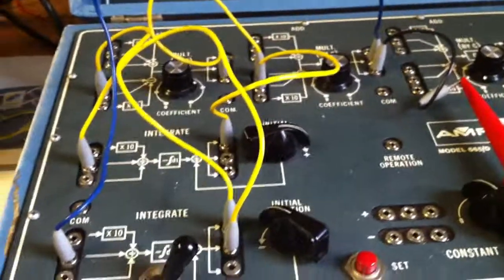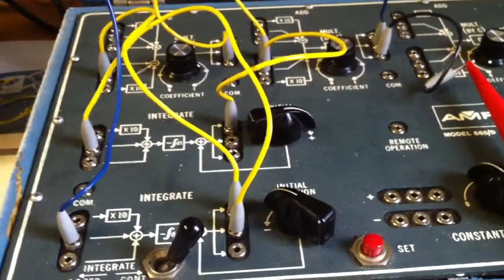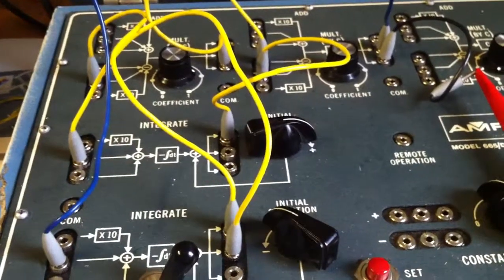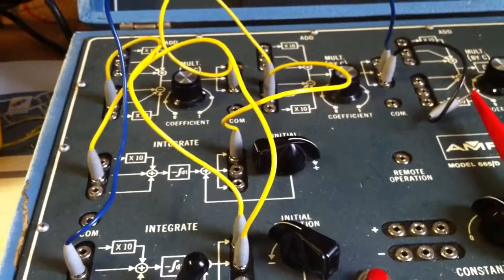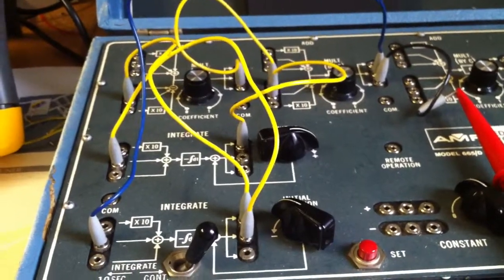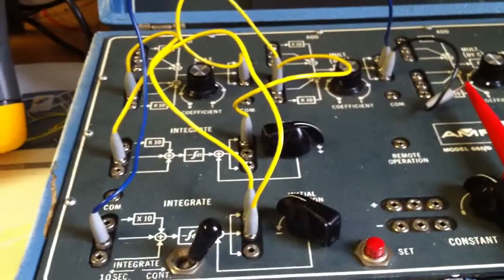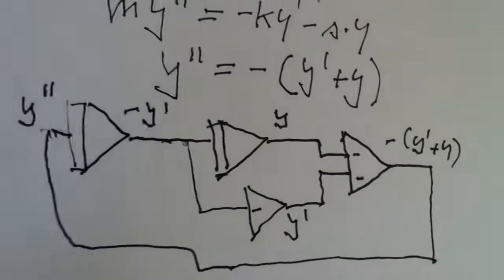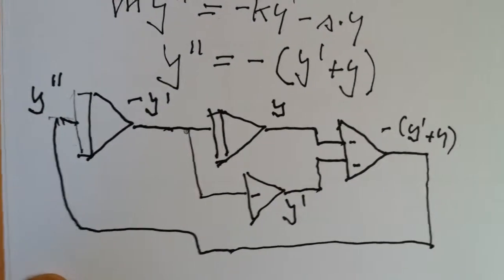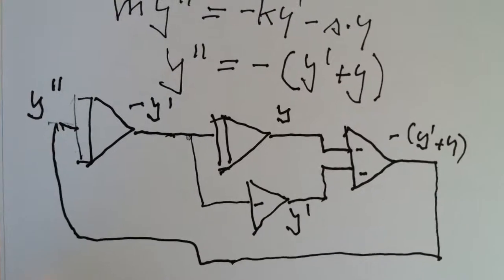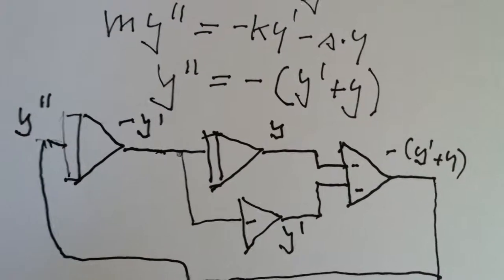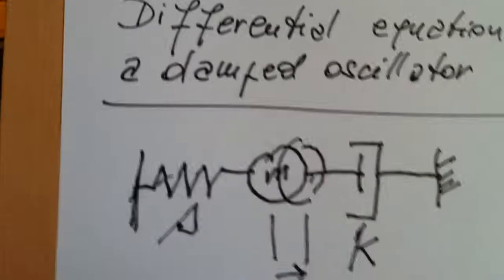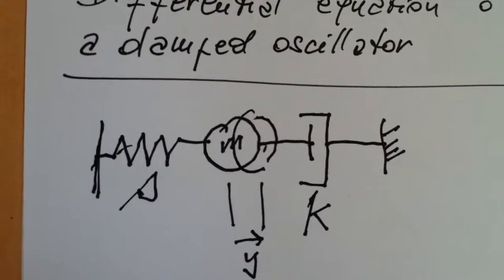And these amplifiers with correct other resistors or capacitors can function as adders, summers or integrators. We just translated a mathematical expression into a physical model. And this model behaves as does the reality, the damping oscillator, which we wanted to study.